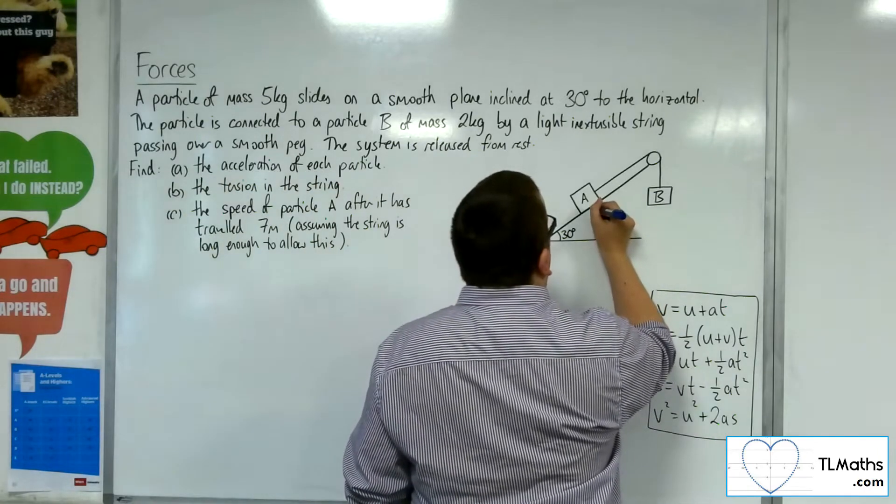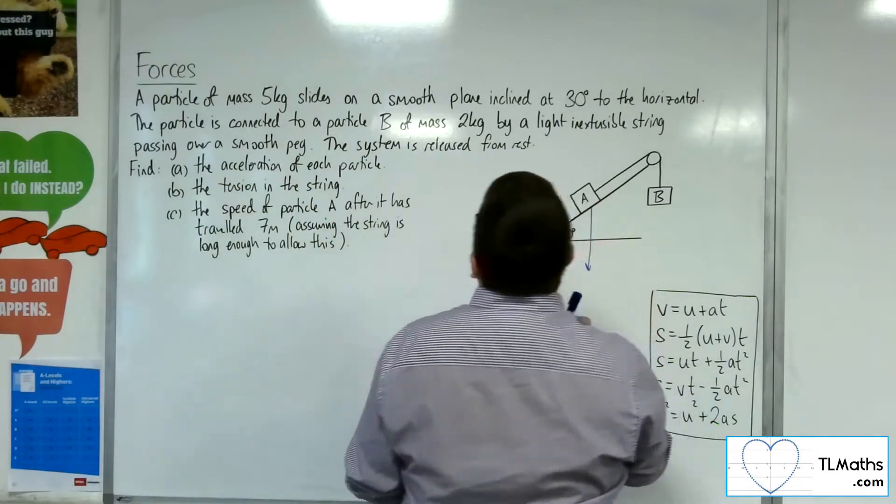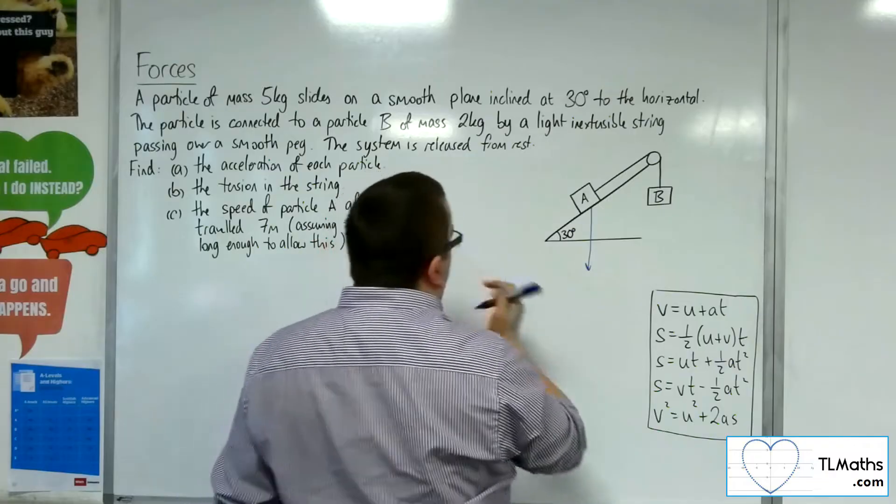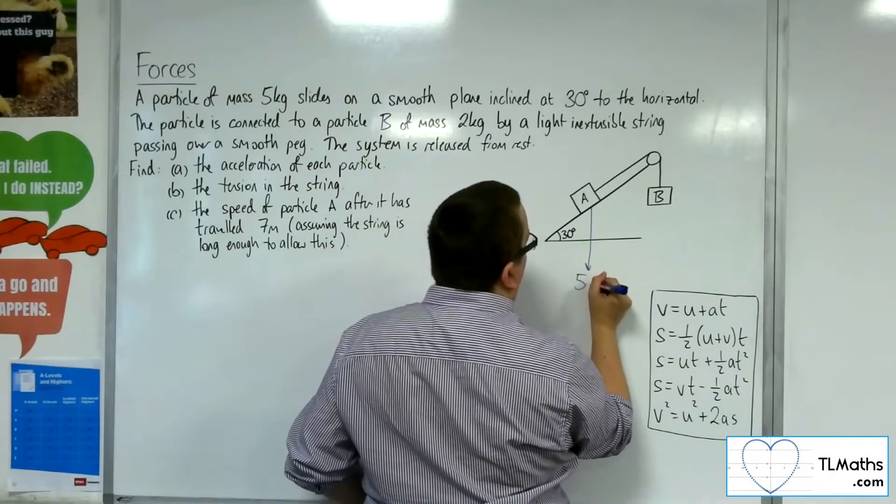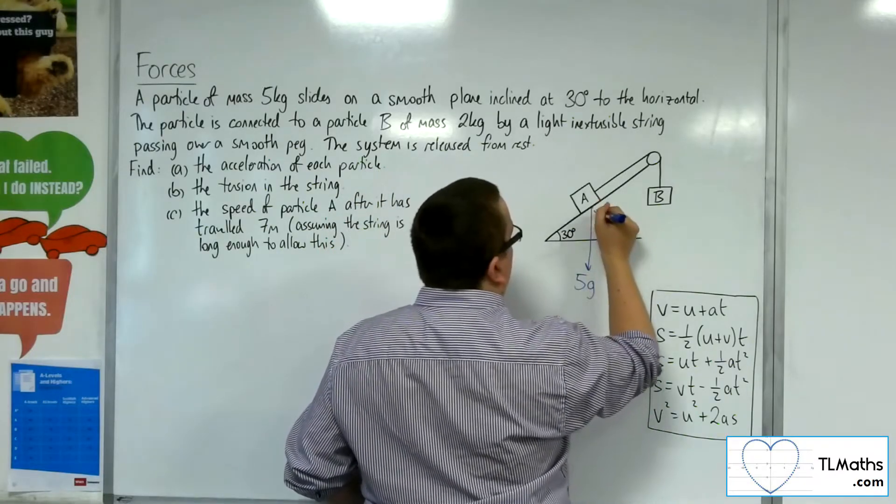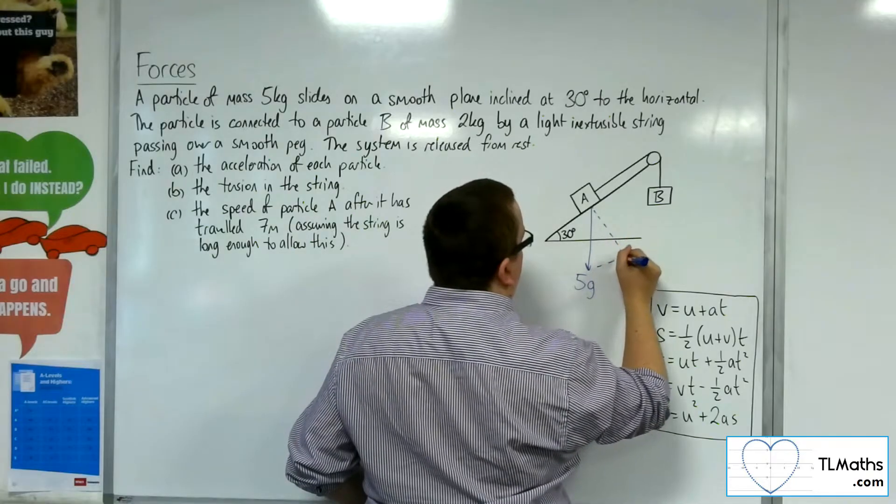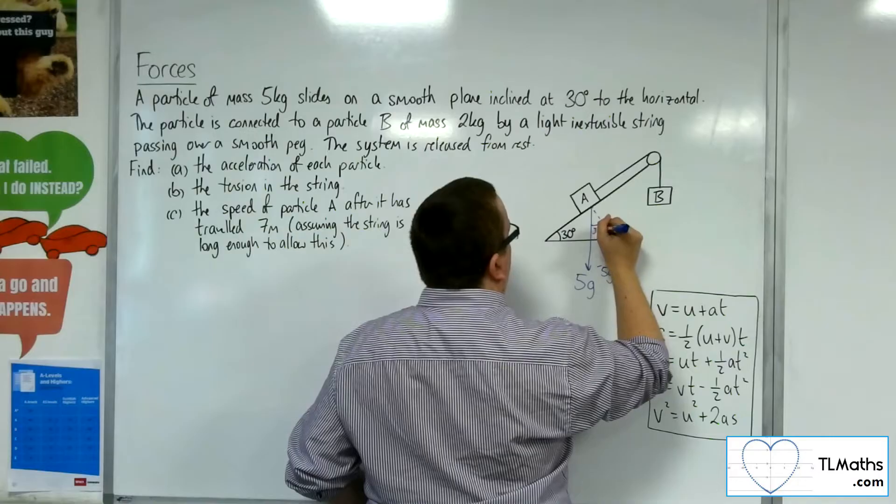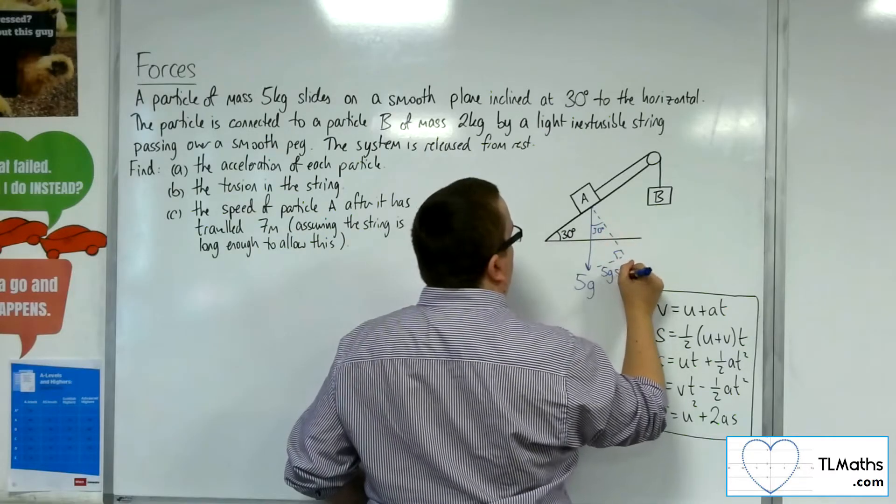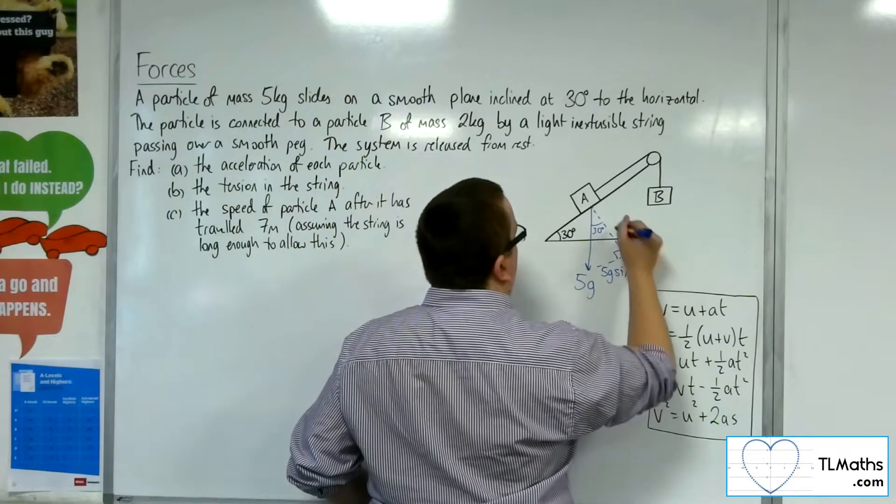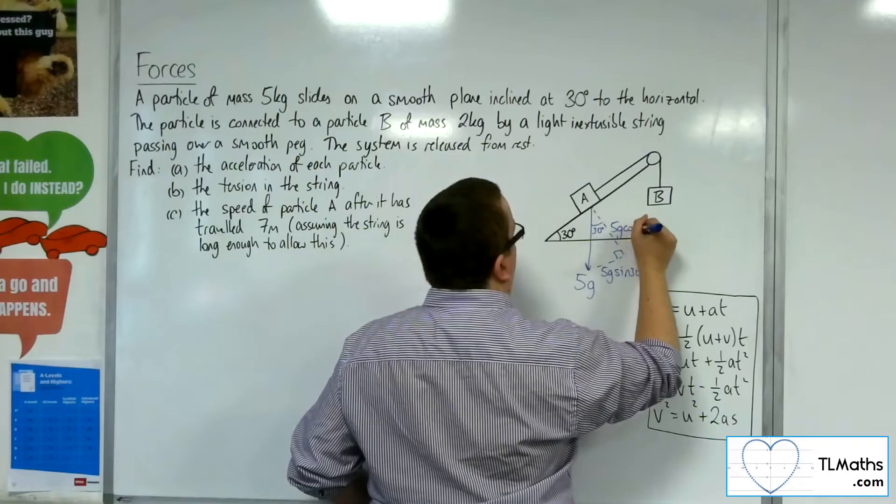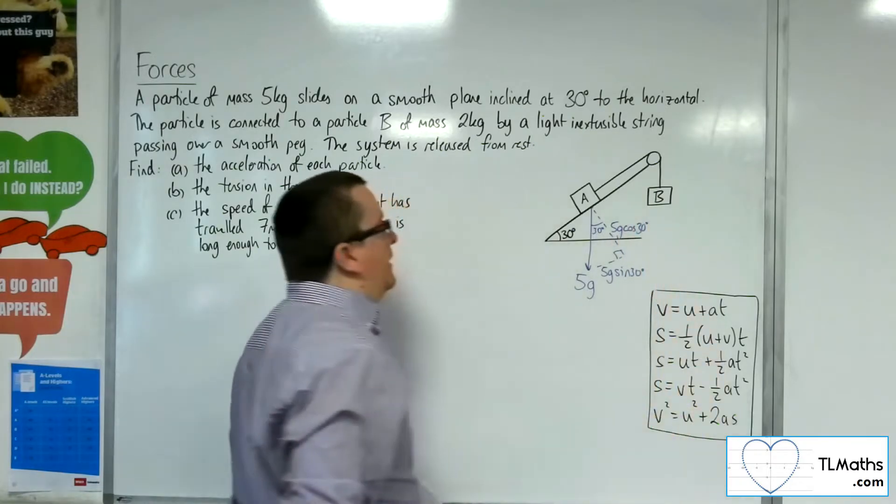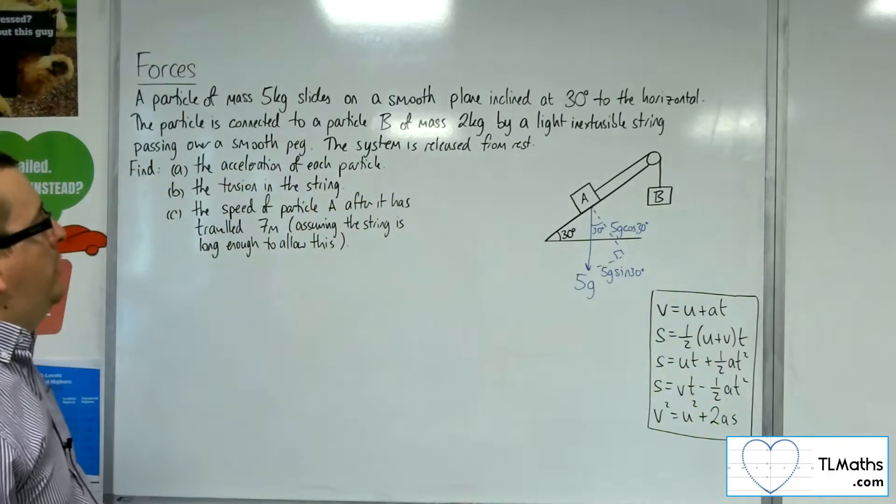For particle A, we've got the weight working vertically downwards. It's got a mass of 5 kilos, so its weight is 5G. So if I complete that triangle, we're going to have 5G, so that angle's 30 degrees, 5G sine of 30, and 5G cosine of 30, for the opposite and adjacent to the triangle.